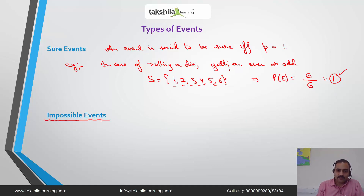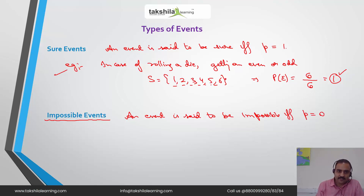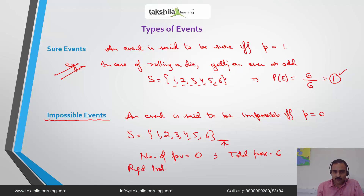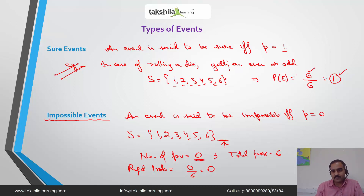Now let us discuss an impossible event. An event is said to be impossible if and only if its probability is equal to 0. Using the same example with sample space {1, 2, 3, 4, 5, 6}, if I require a number 7 or a number greater than 6, there are no such numbers in the sample space. So the number of favorable cases is 0, total possible cases are 6, and the probability is 0 over 6, which equals 0. Therefore, this is an impossible event.